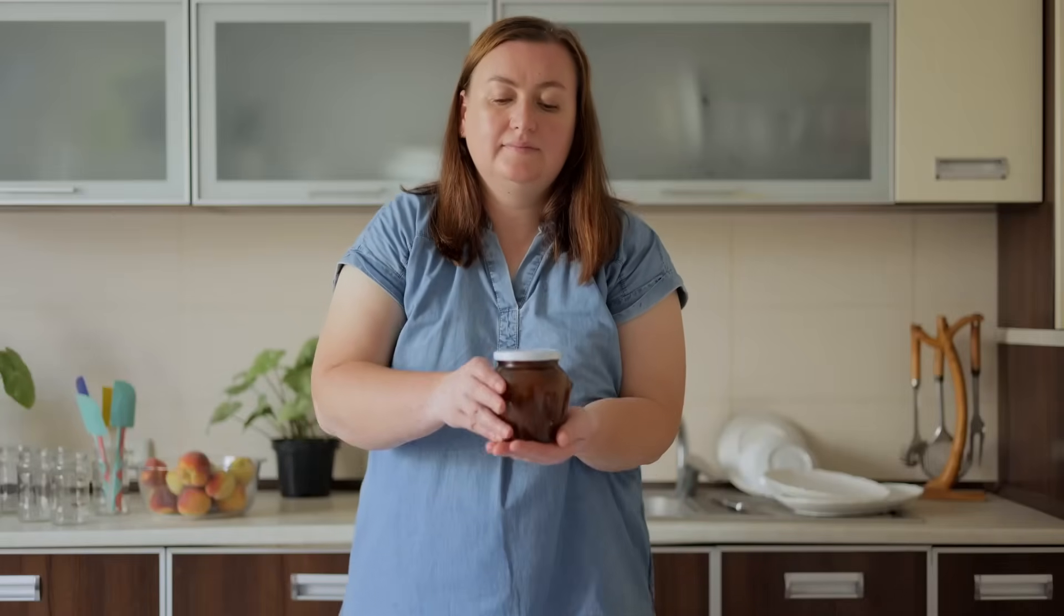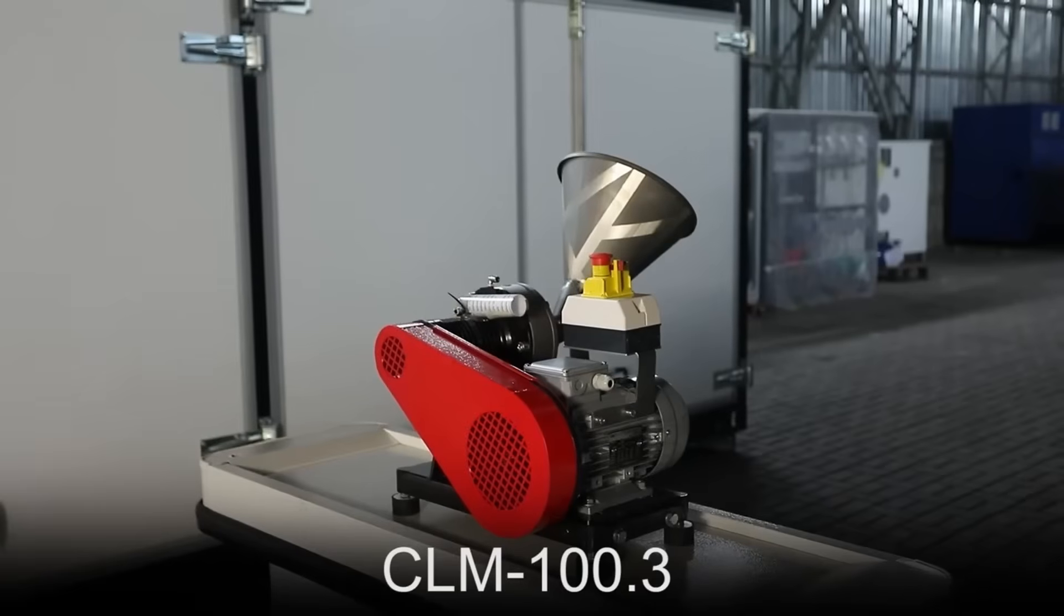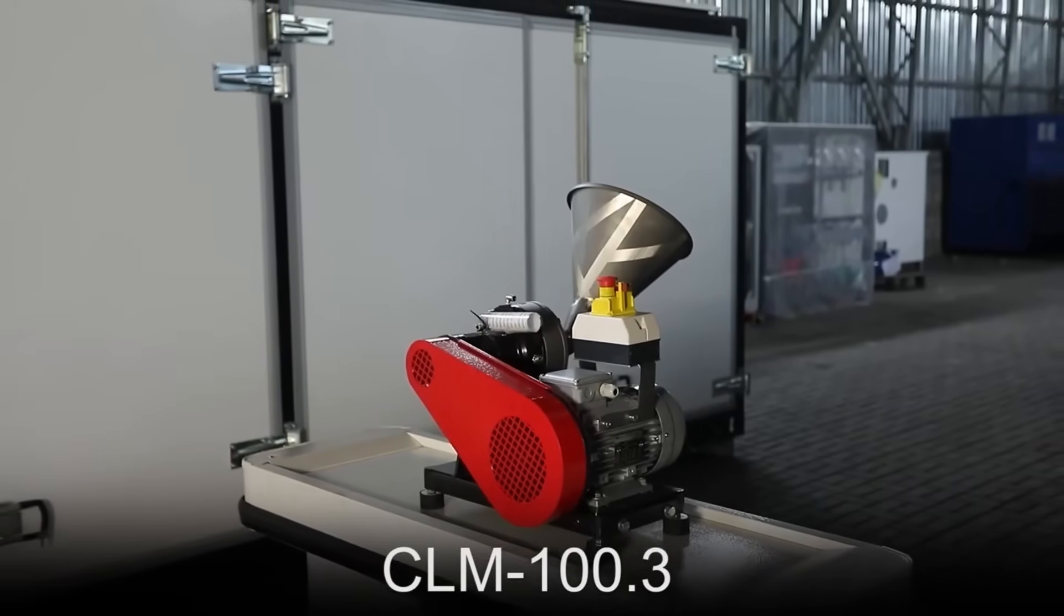More information on the CLM colloid mills and their use for fruit jam production can be found by following the link in the first comment or visiting our website www.globecore.com.